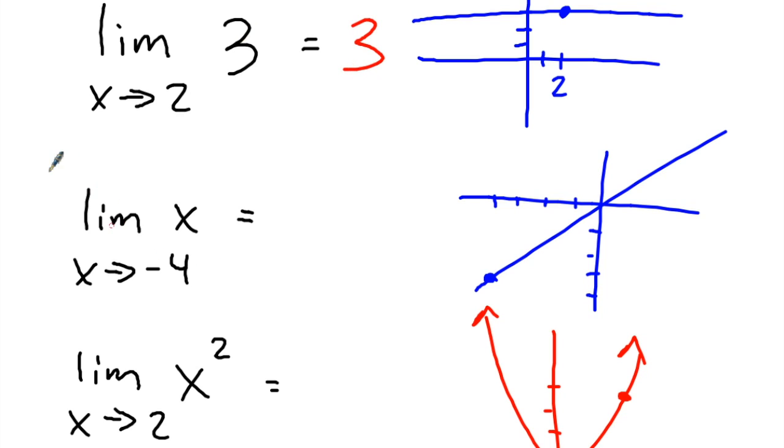And then here's our second example. So as x approaches negative 4, well our little graph there of x would be y is equal to x, which is just this little line right here with a slope of 1. And as x approaches negative 4, here you can see negative 4. The y value of course is negative 4. So all you'd have to do is just plug that in. If you plug in negative 4 for x, you're gonna get negative 4. So therefore, that's gonna be our limit.